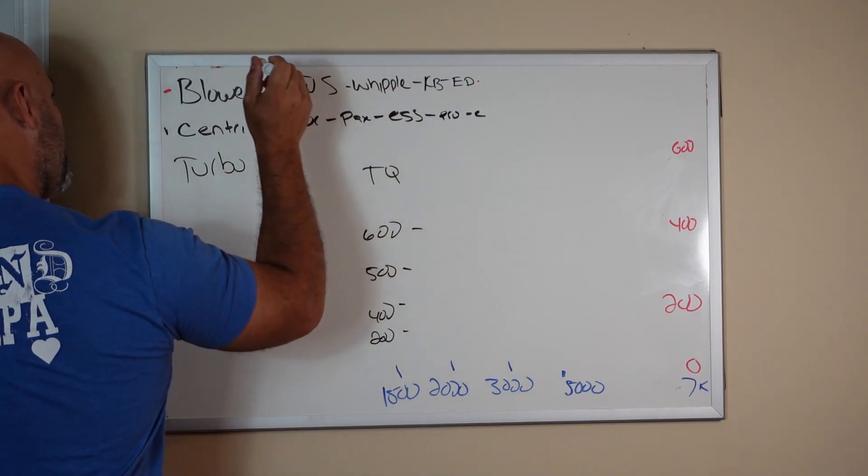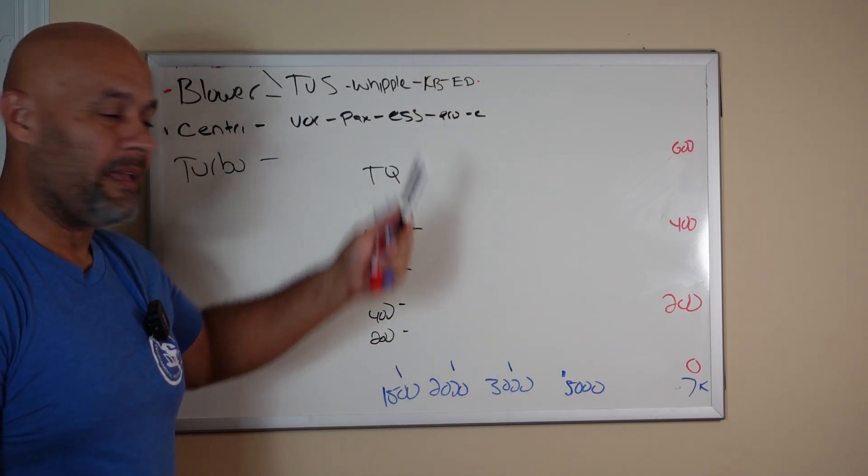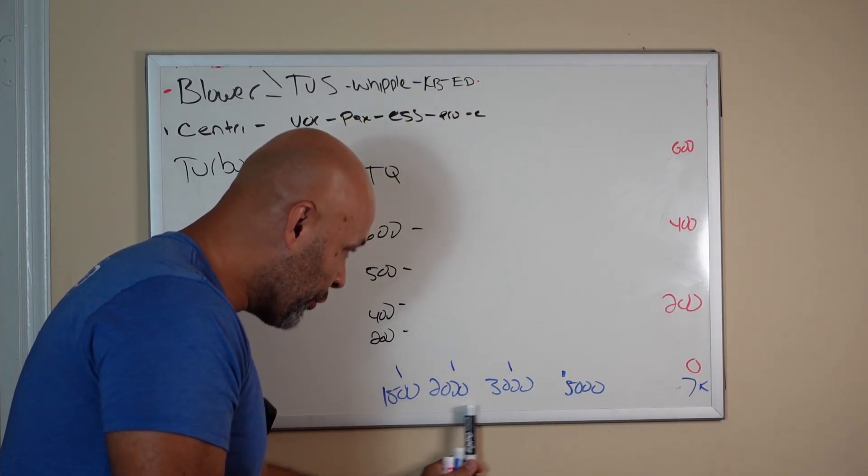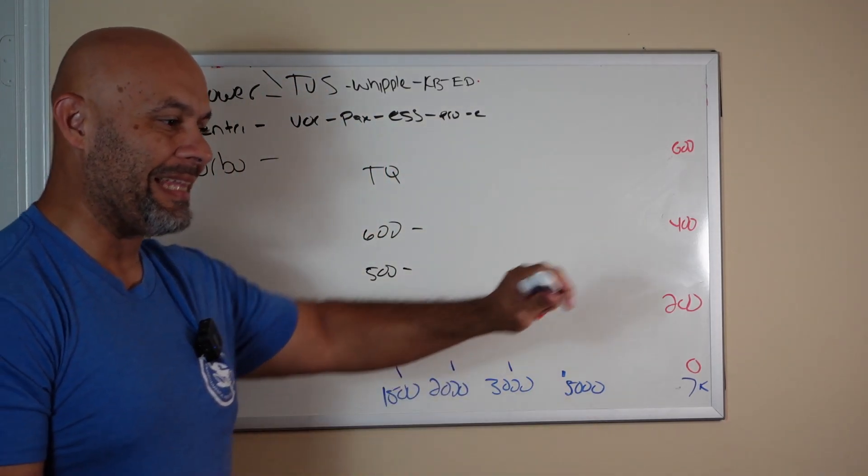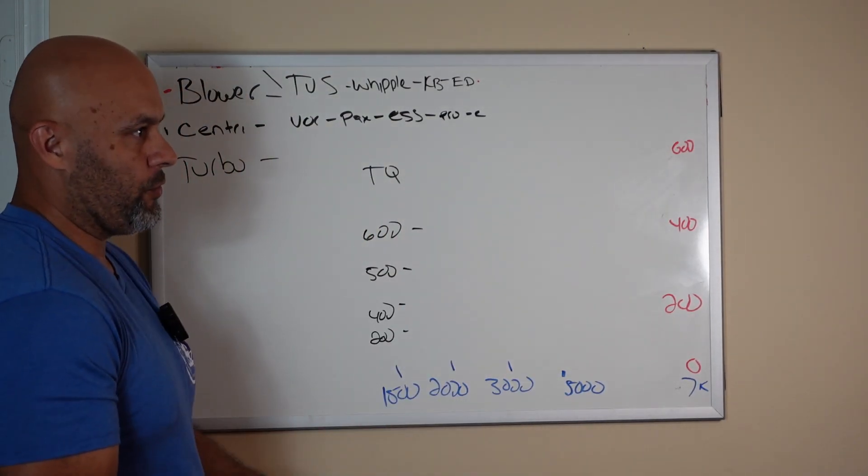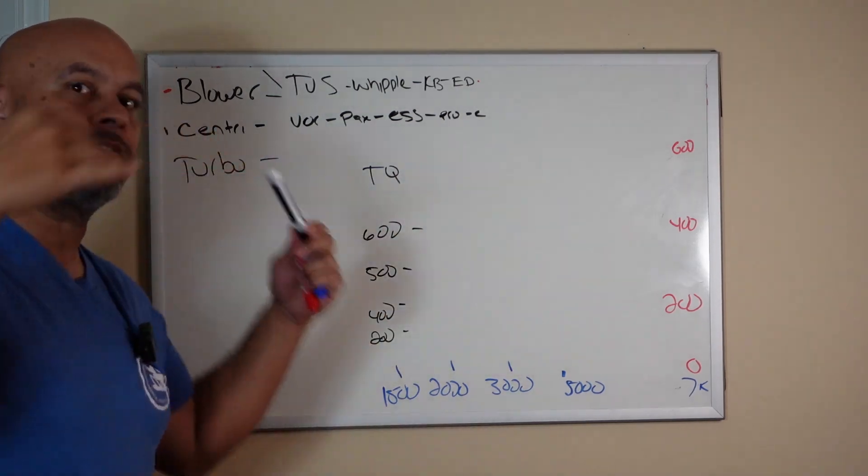To mimic the power delivery of a TVS. Why don't you just get a TVS or a Whipple if you're going to drive around and hover at 2000 to 5000 RPMs in daily driving situations? So you want a zippy feeling car. Fourth gear, 2000 RPMs, just floor it. It's going to go. You're going to have the torque.